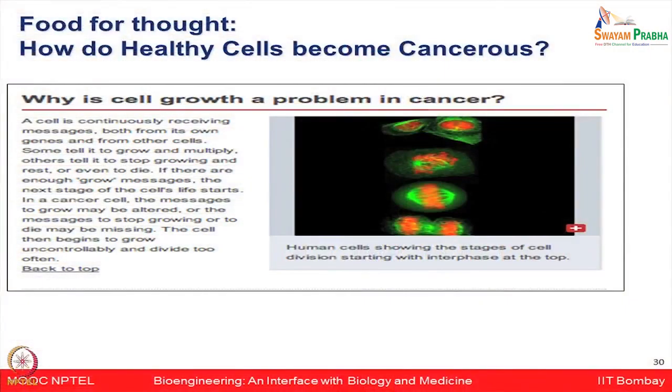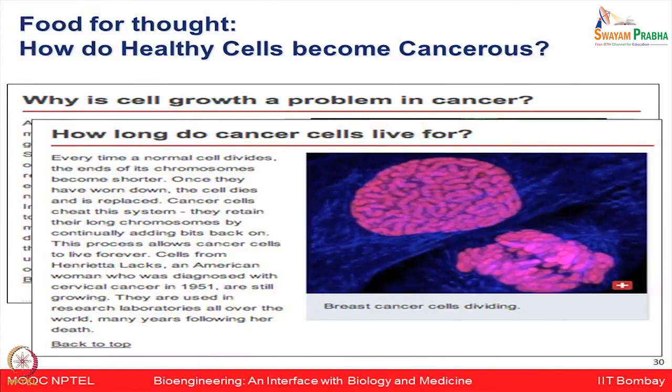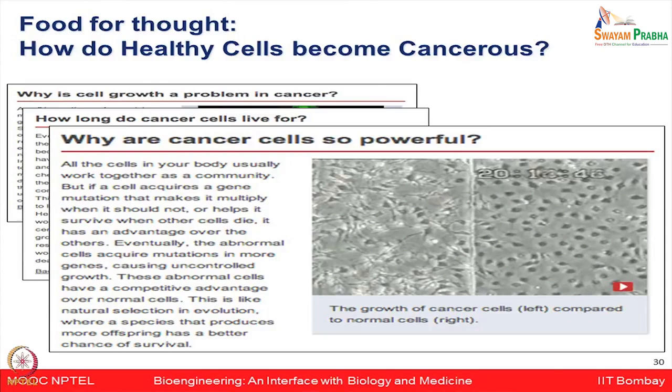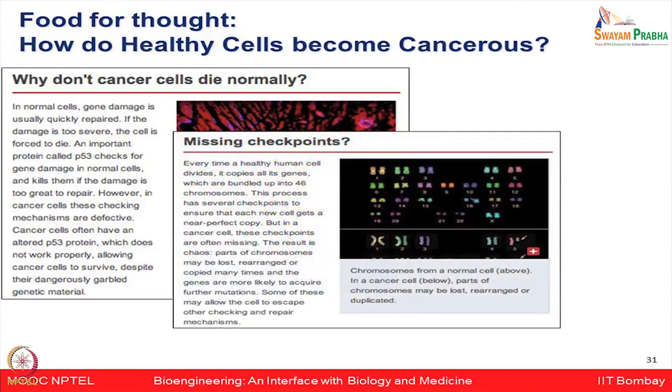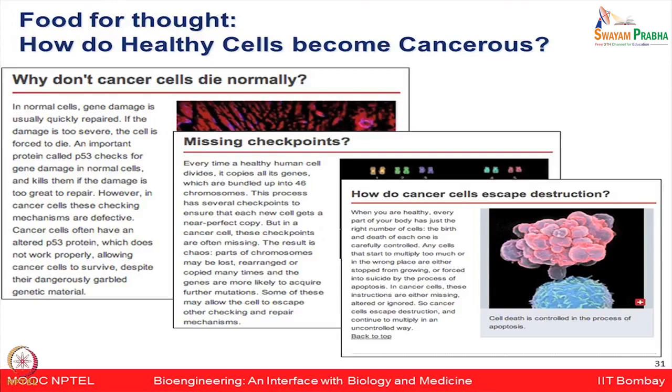There are important open questions from research on how healthy cells become cancerous. We still need to understand why cell growth is problematic in cancer, how long cancer cells live, why cancer cells are so powerful, why they do not die normally, why we cannot control them, what checkpoints are missing in cancers, and how cancer cells escape destruction. There is still much research to be done in this area.